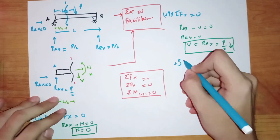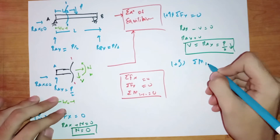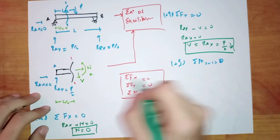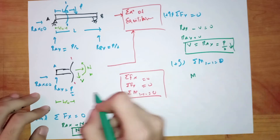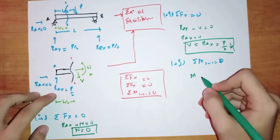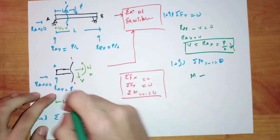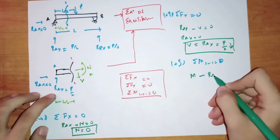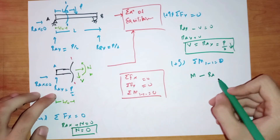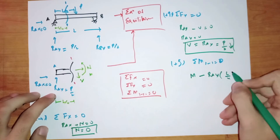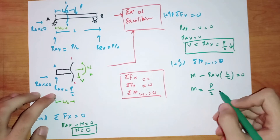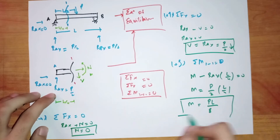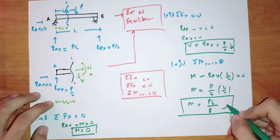And the last equation of equilibrium: summing up all the moments about section 1-1 equal to 0, and taking anticlockwise moments as positive. We have the anticlockwise moment M, and RAY is producing a clockwise moment about section 1-1. So M minus RAY times L over 4 equals 0, and since RAY equals P over 2, M equals PL divided by 8, acting in the anticlockwise direction.